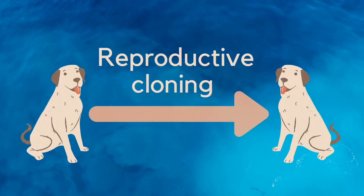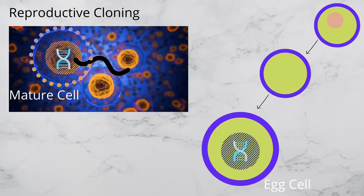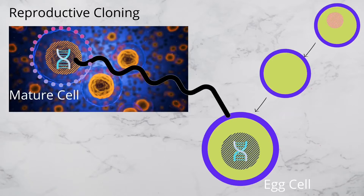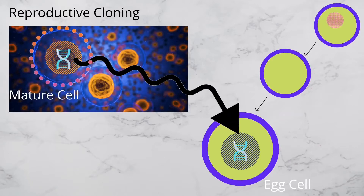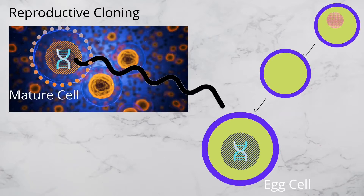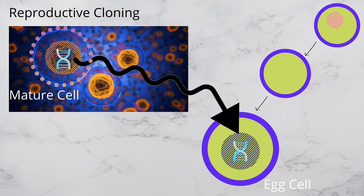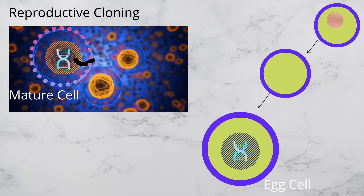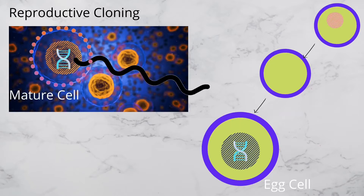The third type of artificial cloning, called reproductive cloning, refers to the cloning of entire organisms. Researchers isolate a mature somatic cell, like a skin cell, from the animal to be cloned. The DNA from this cell is then transferred to an egg cell which has had its nucleus removed.